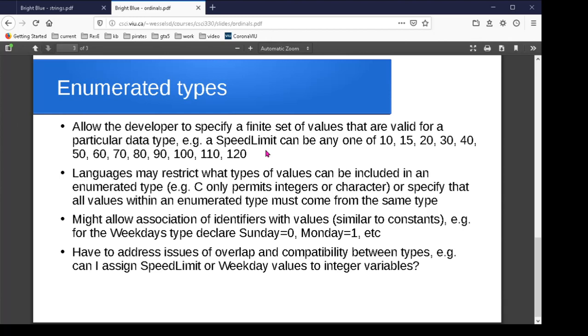You do in cases like this have to start dealing with the possible overlap between different data types. Could I have two different enumerated types that both had Monday as an entry? Or if I see the value one, which data type is that being used for?